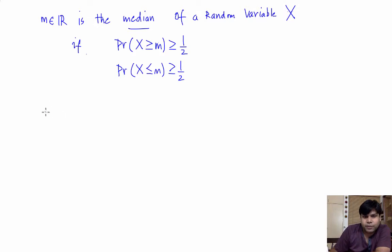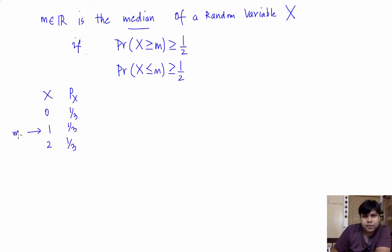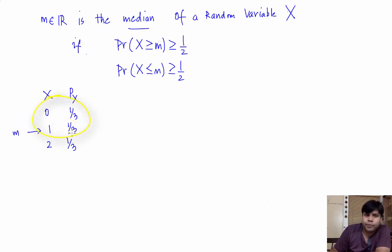Let's do a couple of examples. Suppose we have a discrete random variable x which takes three values 0, 1, and 2, and the probability mass function associated with x is one-third, one-third, one-third. Notice that 1 is the median in this case, because the probability that x is greater than or equal to 1 is two-thirds — that is, the probability that x equals 1 or 2 — and the probability that x is less than or equal to 1 is also two-thirds, because that's one-third plus one-third. Therefore, 1 is the median.